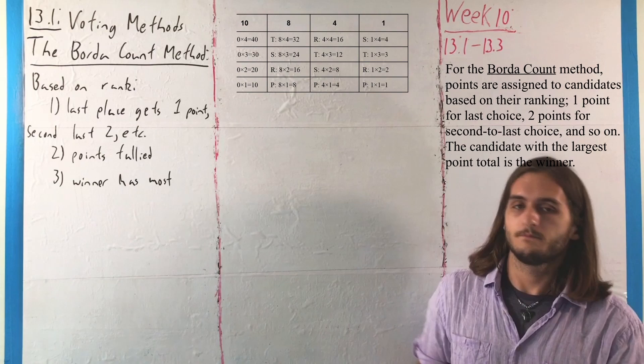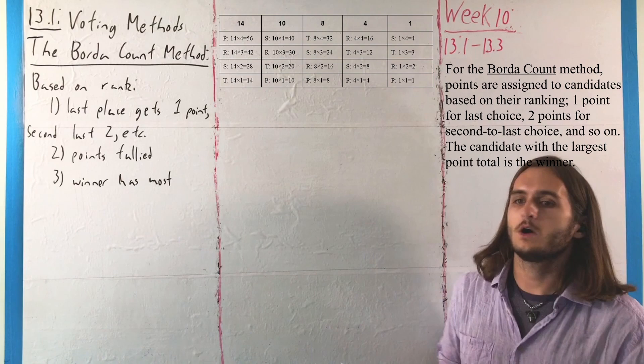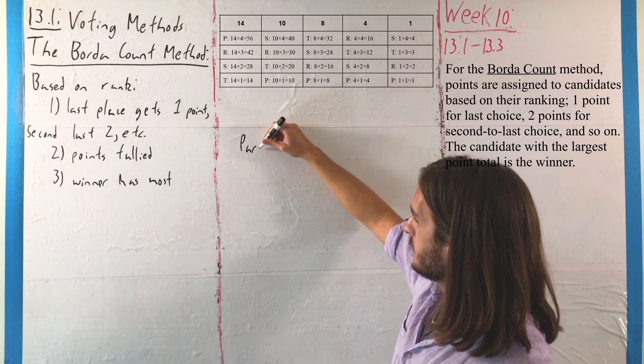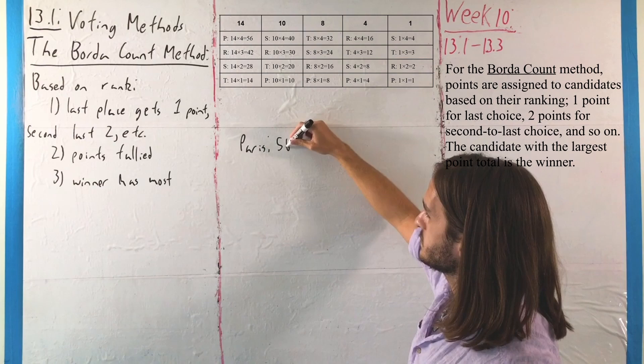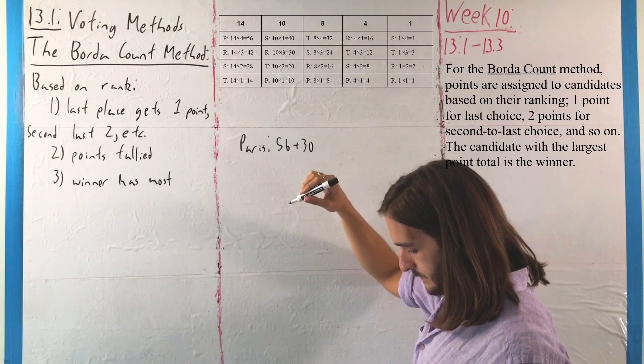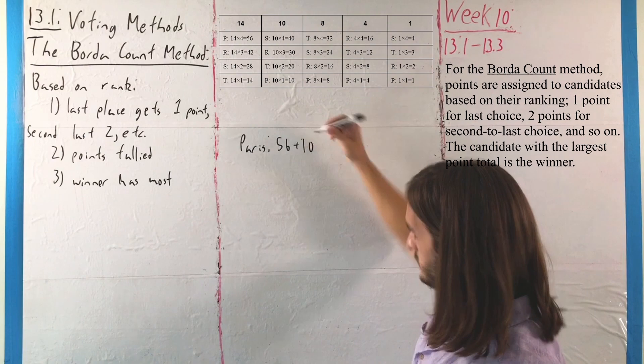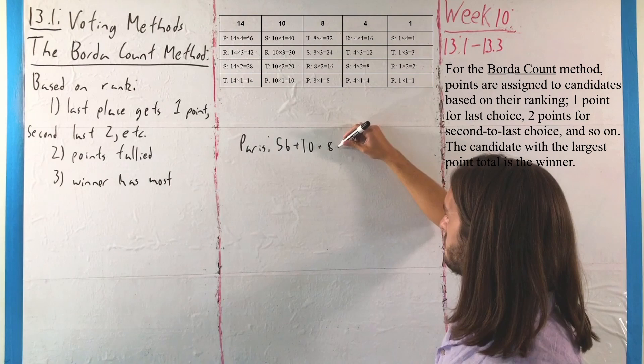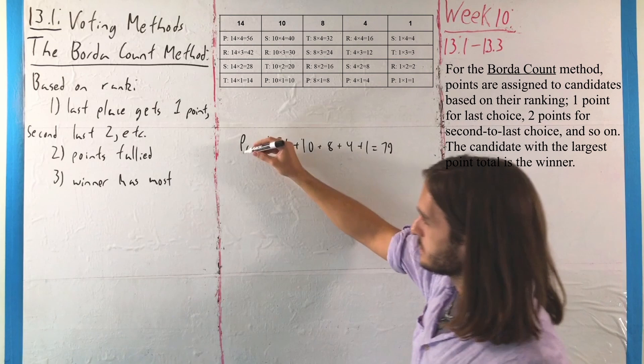Tallying up the total scores: for Paris, we have 56 points from those 14 ballots that put it first, plus 10 from the next 10, along with 8 from the next group, 4 from the group of four, and then 1 for a total of 79 points.